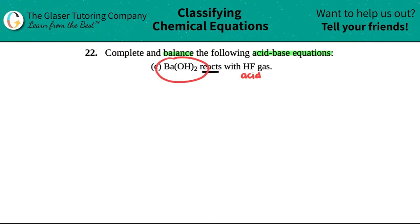But Ba(OH)2, that is one of your bases that you have to memorize. That's your strong base, one of your strong bases. There are six of them, so just memorize them. These are going to be reacting together. We got Ba(OH)2 reacting with HF. Now we just got to figure out what the two products are.